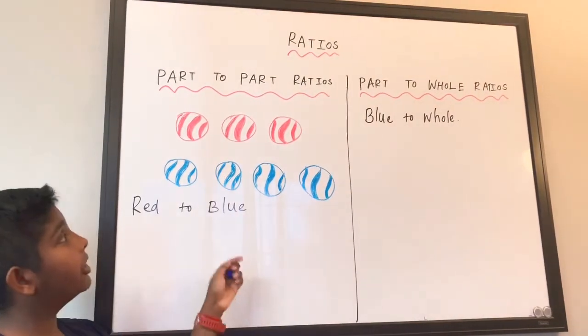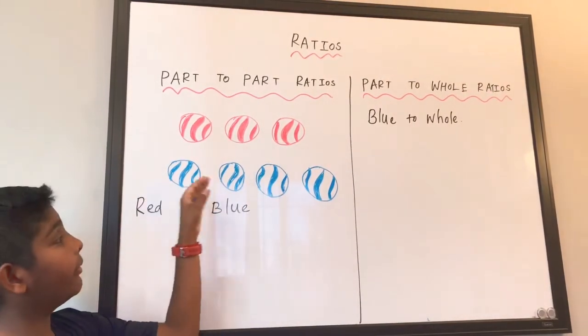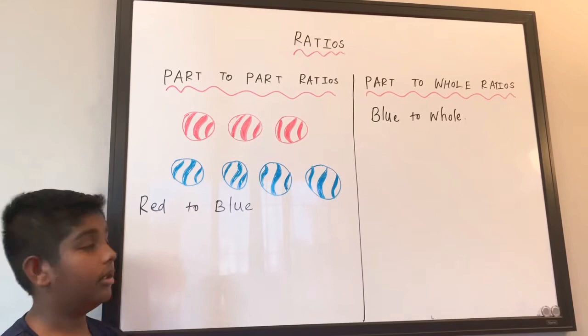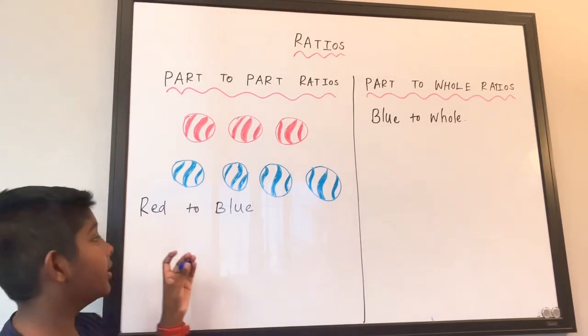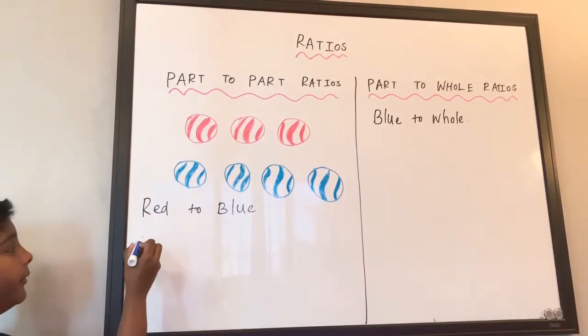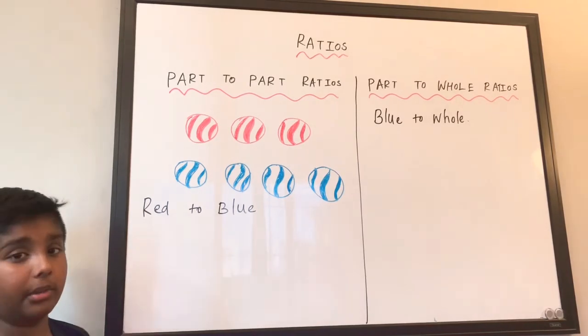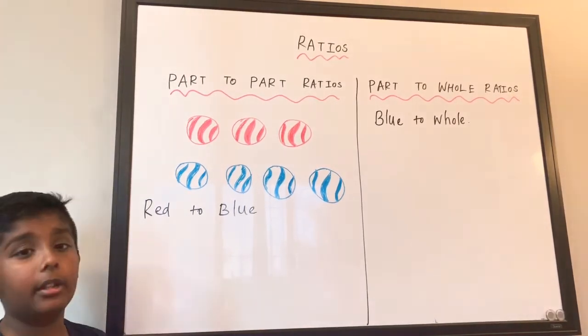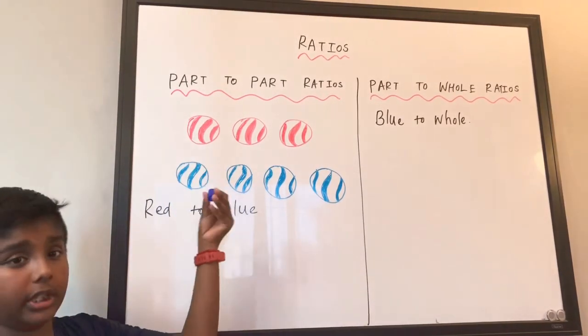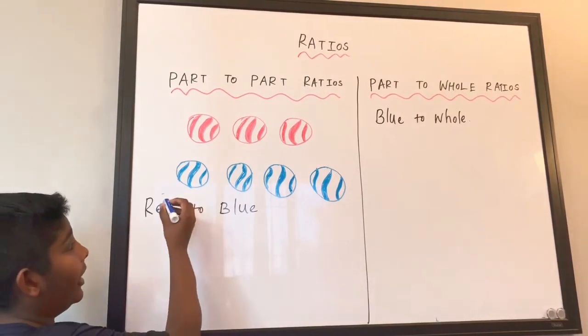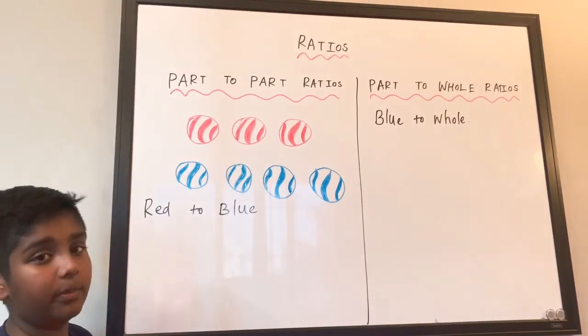Here we have three red marbles and four blue marbles. We have to find red to blue marbles. Part-to-part ratios means we have to find part by part. That's what it basically means.